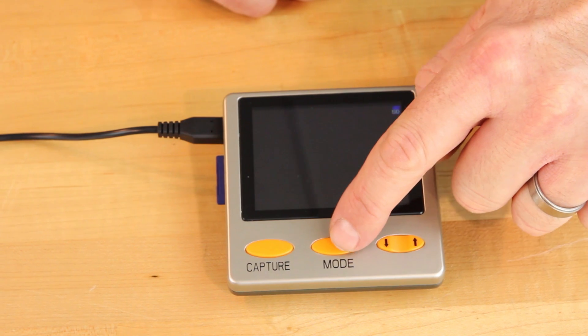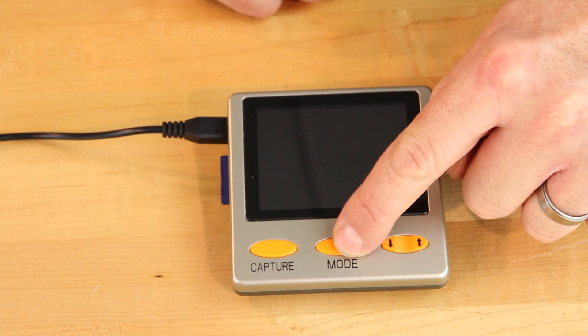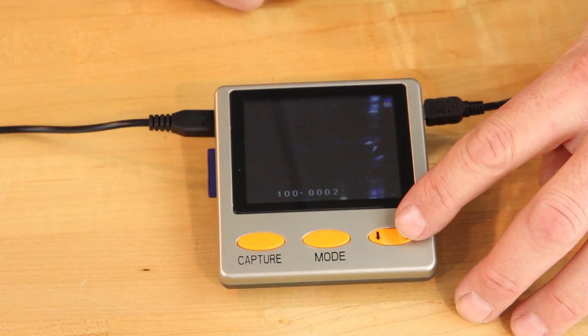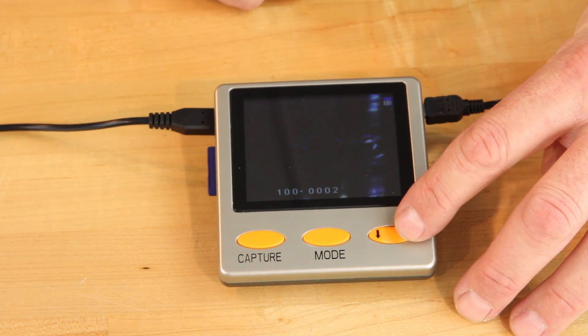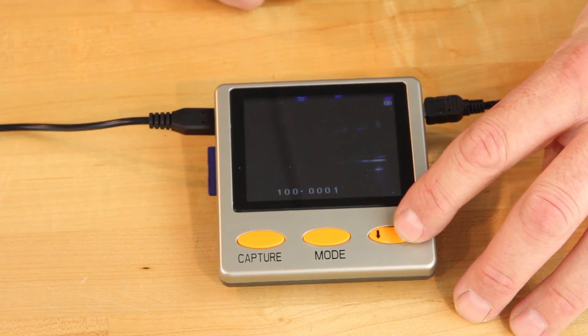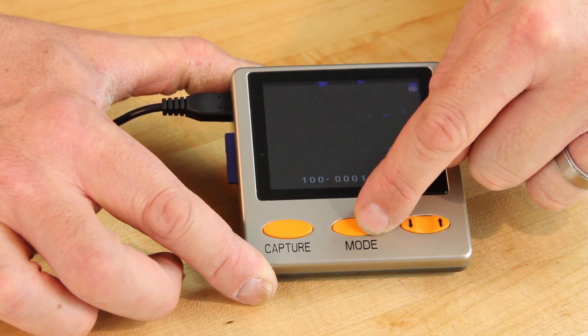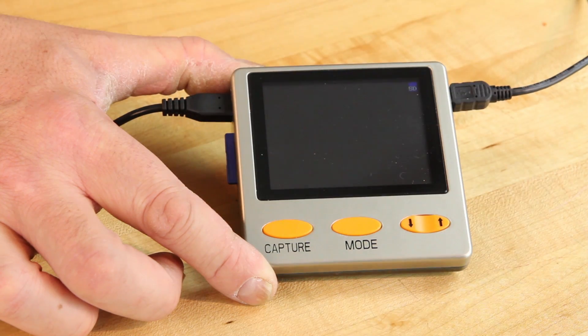To review pictures on the monitor, you will need to press and hold the mode button three seconds to enter the review mode. You can press the arrow buttons to scroll through the pictures taken. To exit the review mode, press and hold the mode button for three seconds.